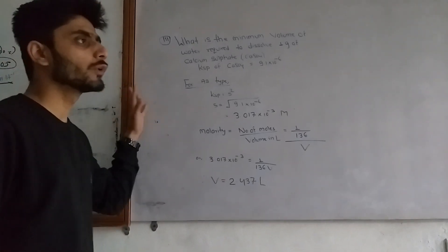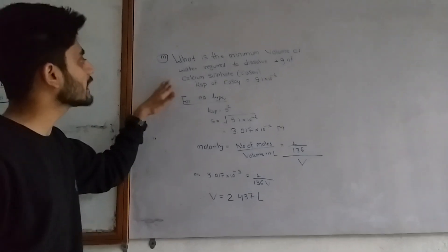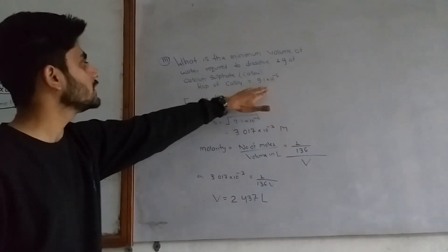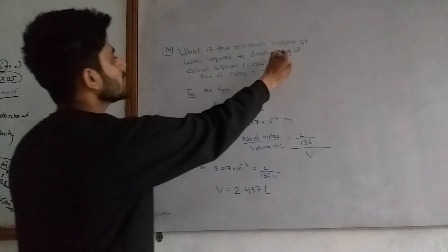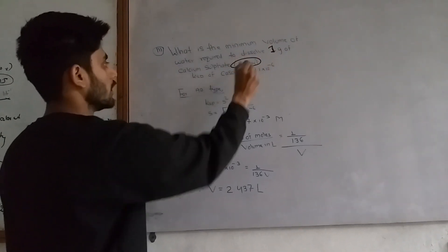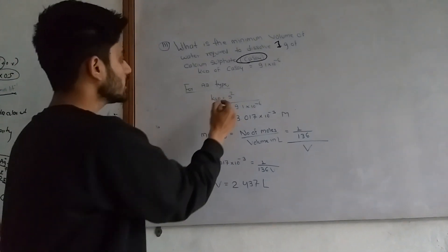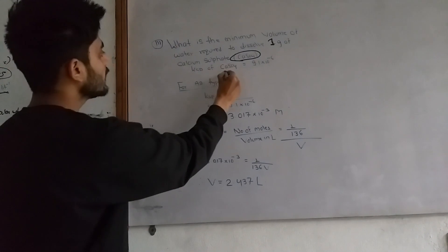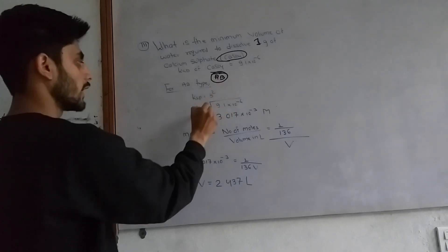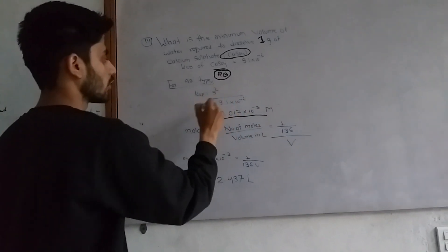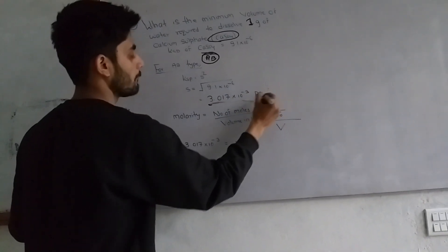Now the next question: What is the minimum volume of water required to dissolve 1 gram of calcium sulfate, CaSO4? KSP of CaSO4 is 9.1 times 10 to the power minus 6. This means solubility. CaSO4 is AB type, so solubility equals square root of KSP, which gives 3.0 times 10 to the power minus 3 moles per liter.